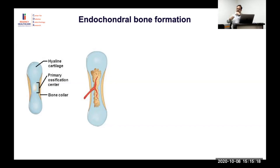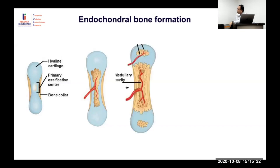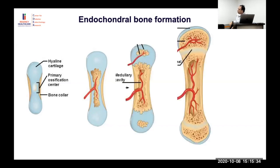VEGF — vascular endothelial growth factor — attracts osteoblasts along with blood vessels, after which calcification happens. The bone has different parts which we need to understand.